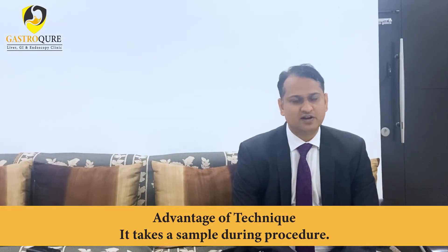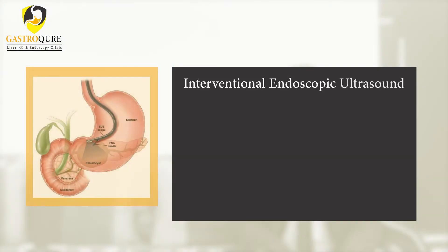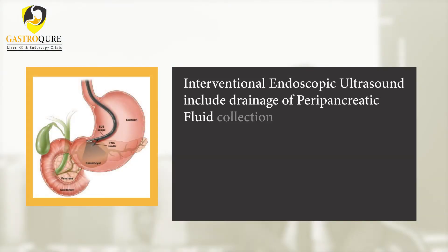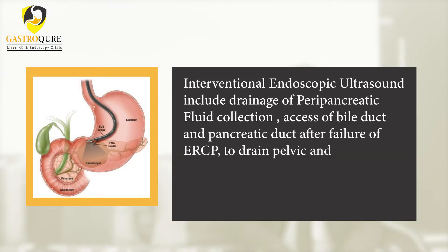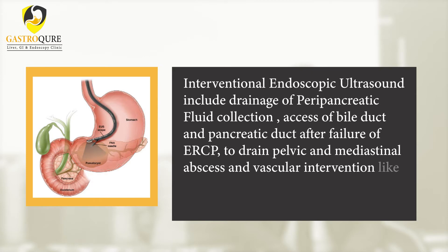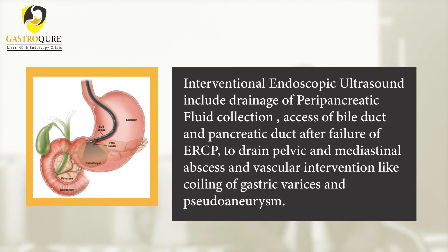This technique has the advantage of taking a tissue sample during the procedure. Interventional endoscopic ultrasound includes drainage of peripancreatic fluid collections, accessing the bile duct and pancreatic duct after failure of ERCP, draining pelvic and mediastinal abscesses, and vascular interventions like coiling of gastric varices and pseudoaneurysms.